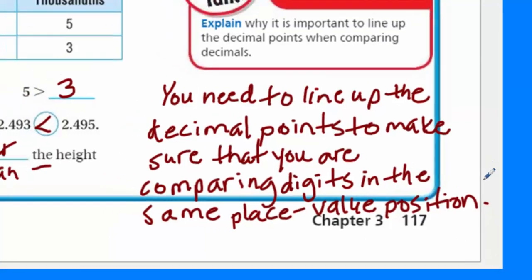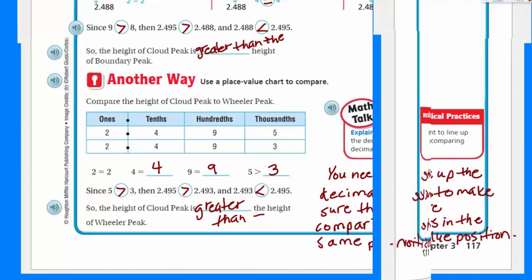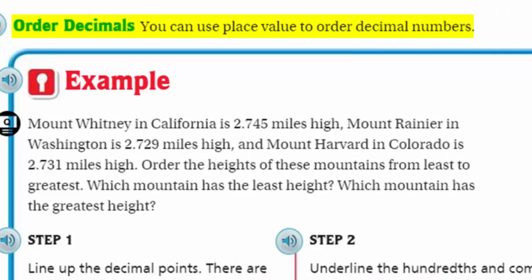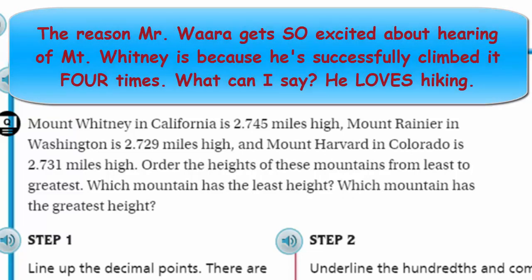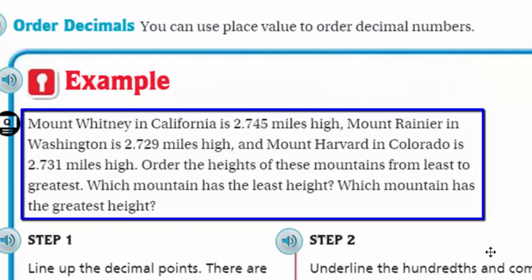Now, I do believe it's time to go to the next page. Oh, page turner person, whatever your name. What's your title? Oh, sorry. He wants to be called page master. Sure. Page master. Why, thank you. Okay. Now, we're going to order decimals. It says you can use place value to order decimal numbers. All right? Example. Mount Whitney. Yes. I can't believe Mount Whitney made it in a problem. So Mount Whitney in California is 2.745 miles high. It says Mount Rainier in Washington is 2.72 miles high and Mount Harvard in Colorado is 2.73 miles high. Order the heights of these mountains from least to greatest. Which mountain has the least height? Which mountain has the greatest height? Okay. They're giving us some steps.